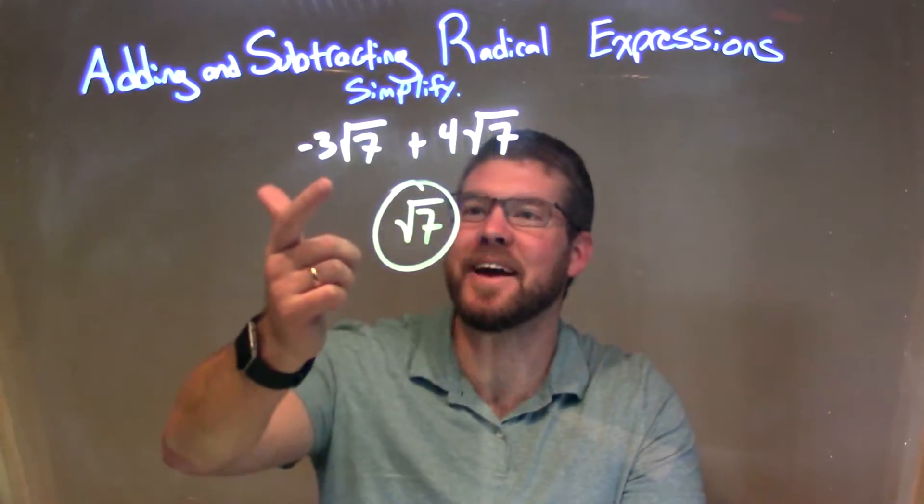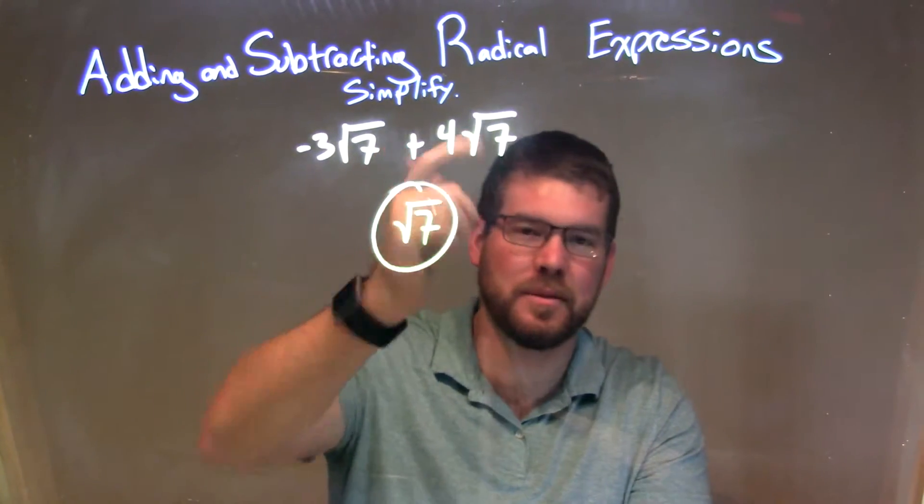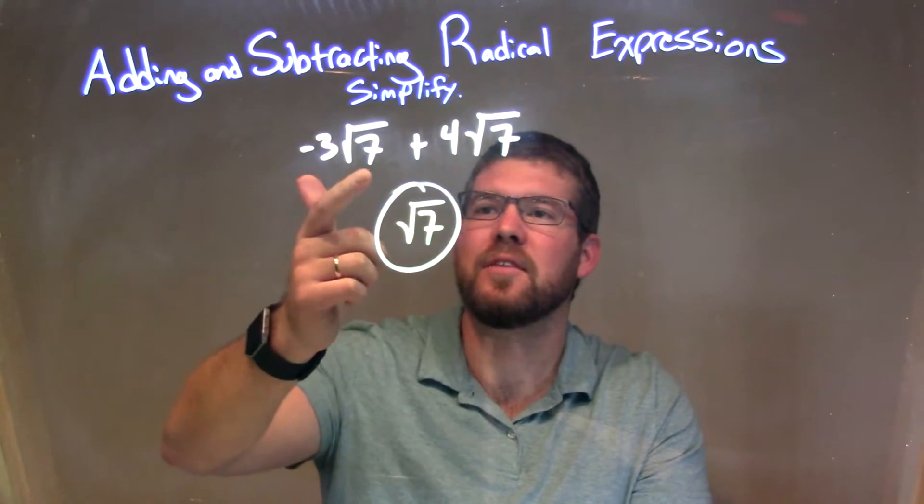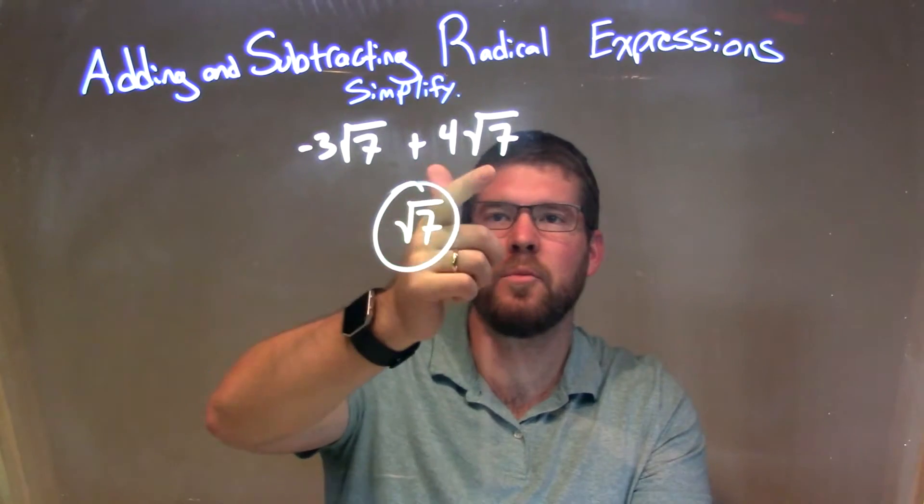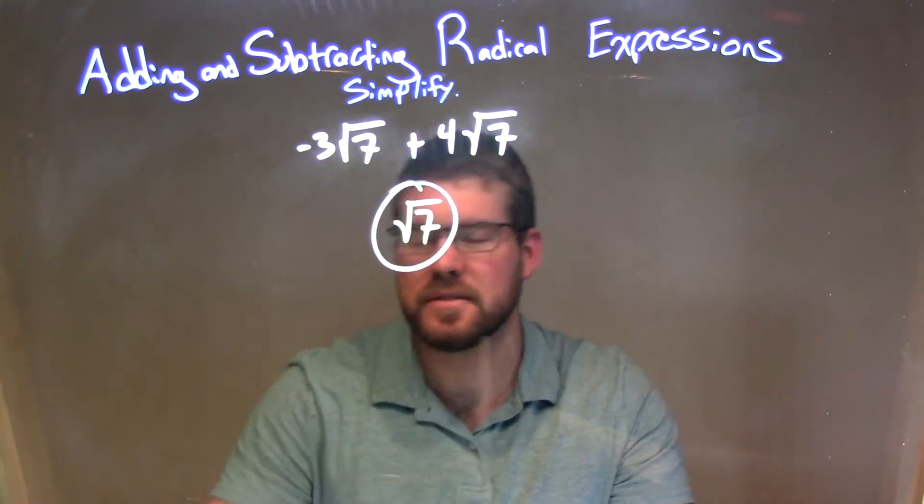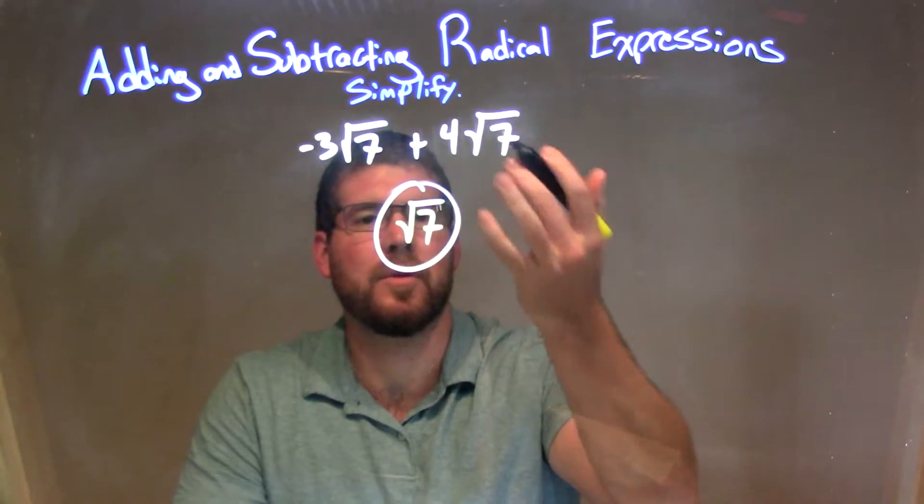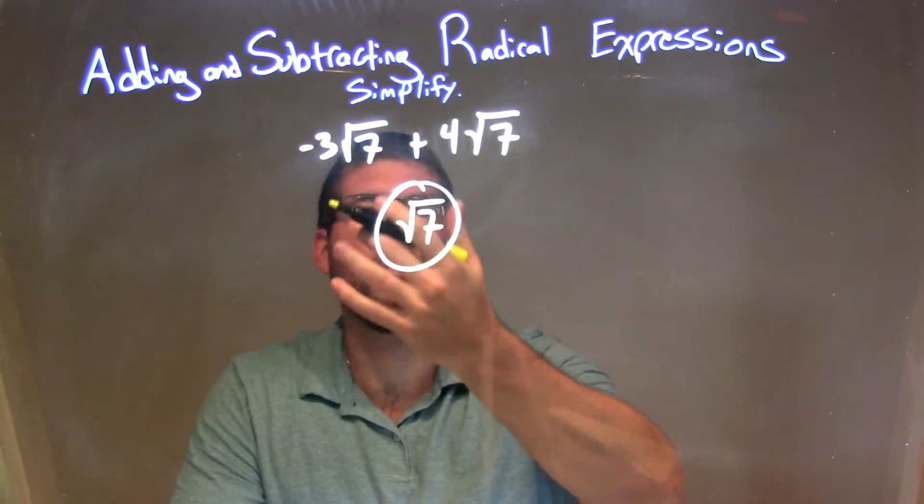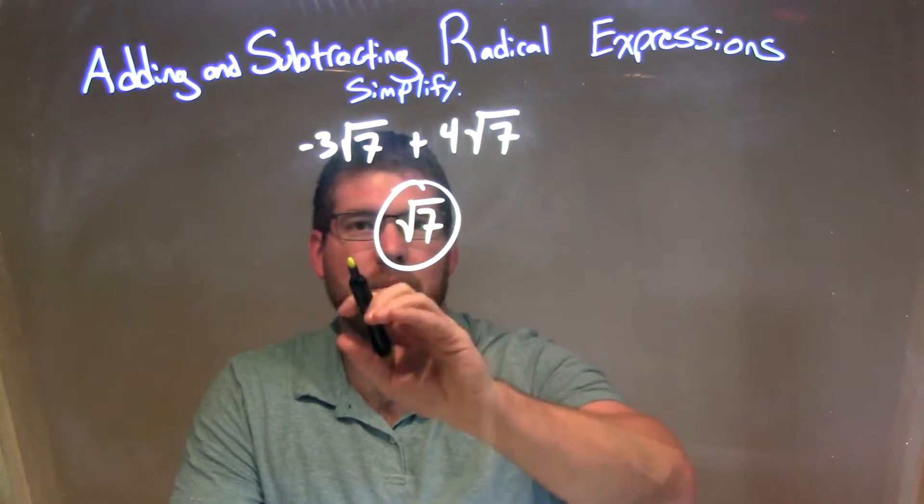Let's recap. We have negative 3 times the square root of 7 plus 4 times the square root of 7. Since they're both being multiplied by the square root of 7, we just look at the number in front of the square root. Negative 3 plus 4 is just 1, and then 1 times the square root of 7 just comes down.